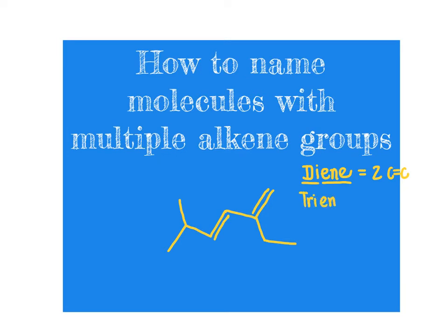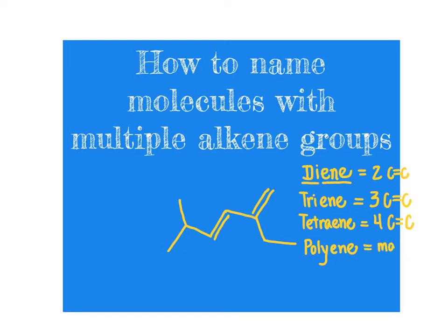A triene is a molecule that has three alkene groups, since 'tri' means three. A tetraene — 'tetra' means four — is a molecule that has four alkene groups. We can go onward from there: pentaene, et cetera. Generally, when we get up to around four or more alkene groups, we refer to the molecule simply as a polyene — a molecule that has many alkene groups, meaning many carbon-carbon double bonds.